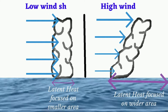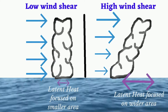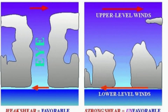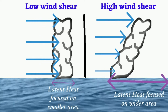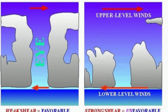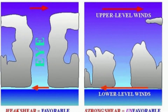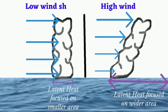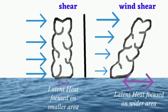For the system to continue to develop, the relationship between the top and the bottom of the system must be maintained. This is only possible when there is low wind shear. A high wind shear involves wind speeds blowing faster at the top than at the bottom, and wind direction may also be different.